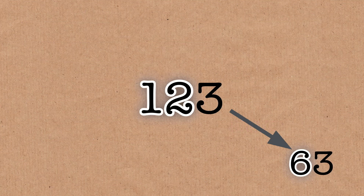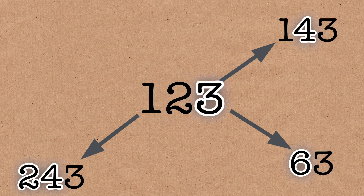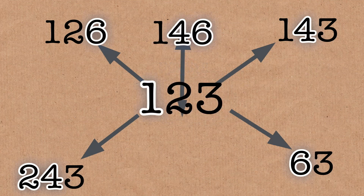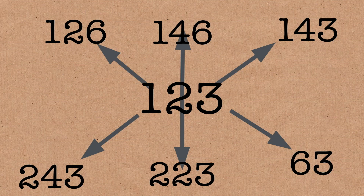Or you could double a number. You could take the 2 and double it and you'd get 143. Or you could double the 3 and get 126. Or you could double the 23 and you would get 146. Or you could double the 1 and you would get 223. Those are examples of things you can do.